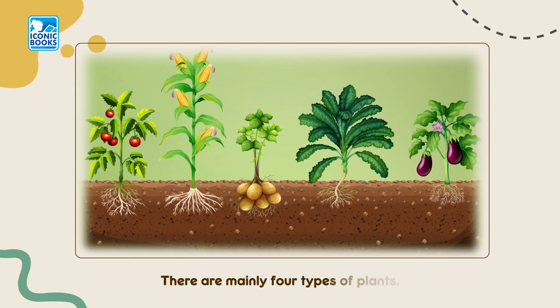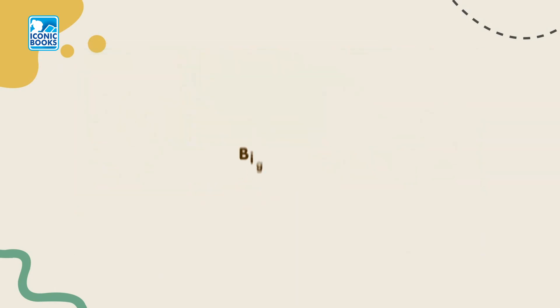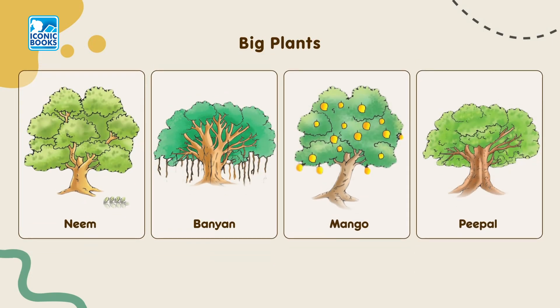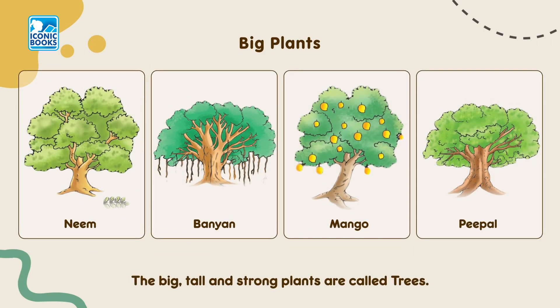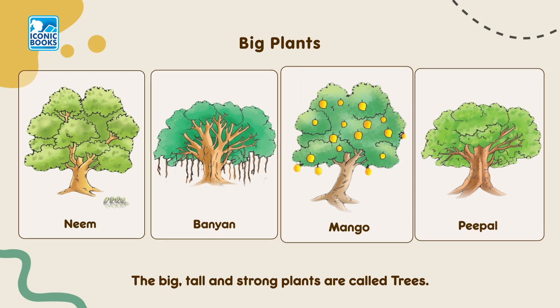There are mainly four types of plants. Big Plants: The big, tall and strong plants are called trees.